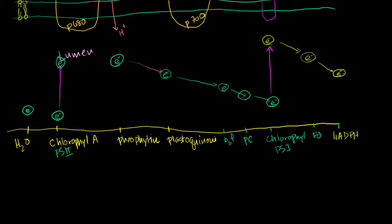The electron eventually ends up in NADPH at a fairly high level of energy still — this electron can still be transferred to other things and release energy. We'll see that when we talk about the light-independent reactions. The whole point of showing you this is to depict graphically that the electron is starting off at a pretty low energy state, and the only way this happens is by energy from light — it would not happen on its own, going from a low energy state to a higher energy state.